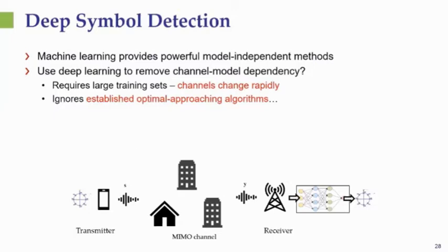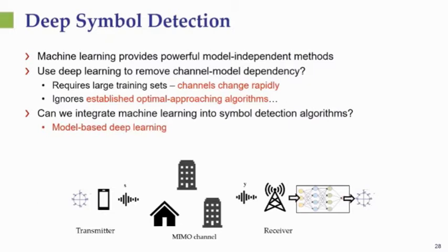On the other hand, standard communication theory provides methods that are optimal under various criteria and for which we can analyze the properties of the solution conveniently. This raises the question of whether instead of using black-box machine learning solutions not designed specifically for communication problems, we can combine machine learning and communication in a way that preserves some of the desirable properties of standard communication solutions — developing learning methods that rely on well-understood models rather than generic solutions.